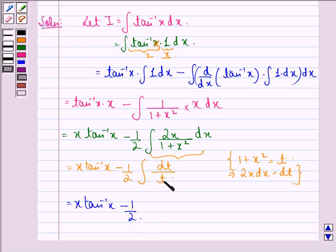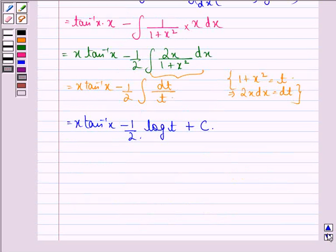Now integral dt by t is log t plus some constant c. Now we put back the value of t as 1 plus x square. That is equal to x tan inverse x minus 1 by 2 log of mod 1 plus x square plus c.